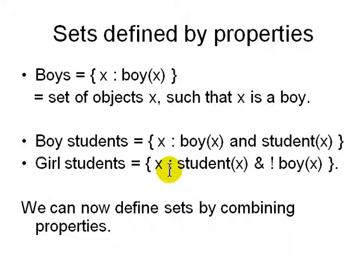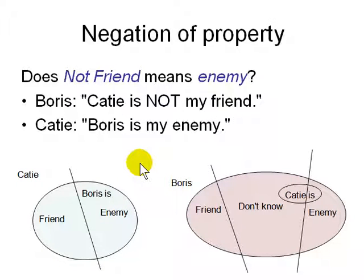But there's a problem. What does negation mean? Negation is a big problem in logic because it involves defining what is not. You know what a student is, but what is not a student? Is a cat not a student?